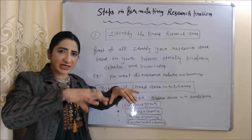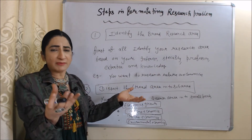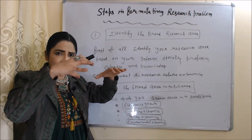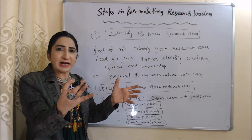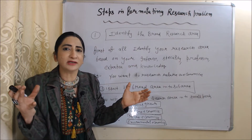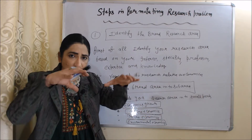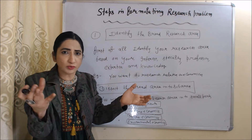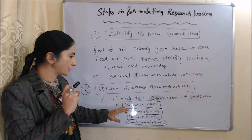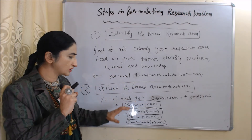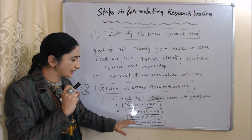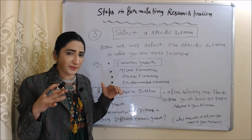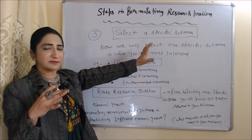The second step is to dissect the broad area into sub-areas. Now divide your research area into smaller parts. For example, your research area was economics. You will divide economics into sub-parts because economics is a wider concept — you cannot do research on all of economics. You divide it into parts such as economic growth, macroeconomics, microeconomics, and environmental economics.